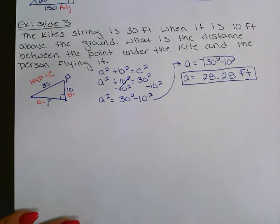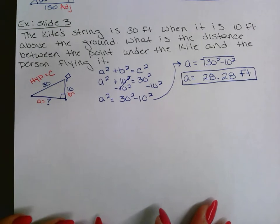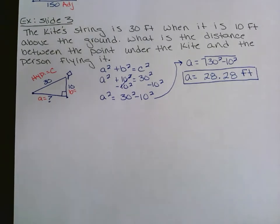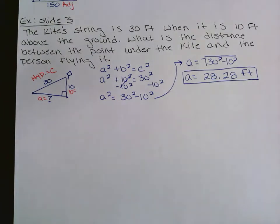In AP Calculus they give you full credit for three decimal places. If you use two, you must round properly.